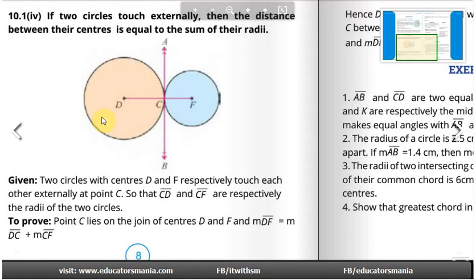The theorem statement is: if two circles touch externally, then the distance between their centers is equal to the sum of their radii.